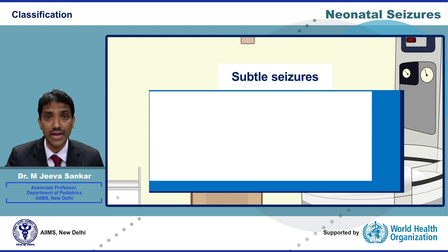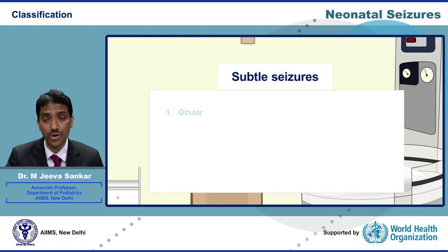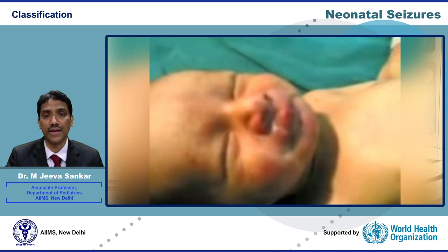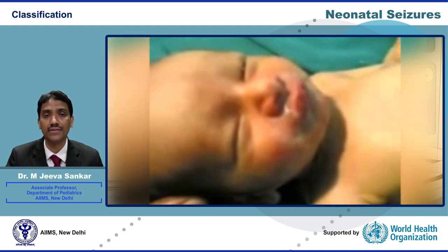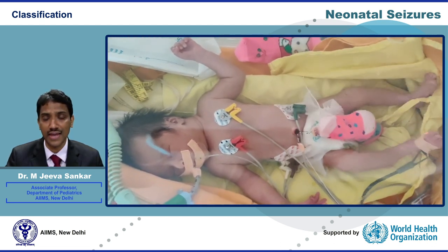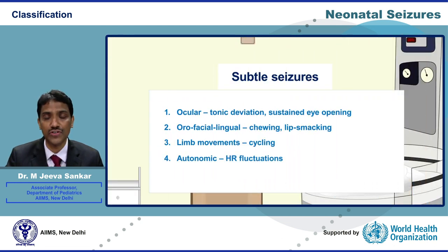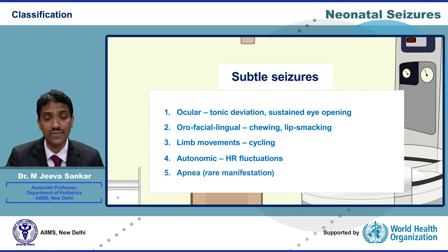The major manifestations of subtle seizures include ocular movements such as tonic deviation of eyes or sustained eye opening, orofacial lingual movements like chewing and lip smacking, limb movements like cycling and pedaling, and autonomic phenomena such as fluctuations in the heart rate and apnea. Some of these movements are not consistently associated with seizure activity in the EEG.